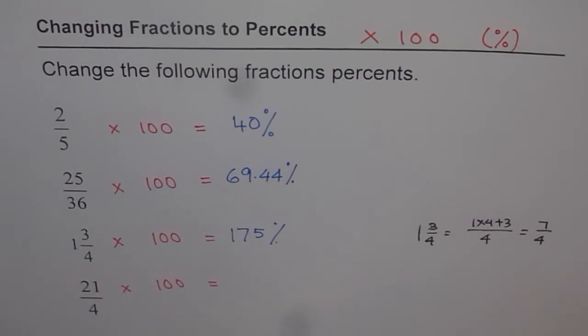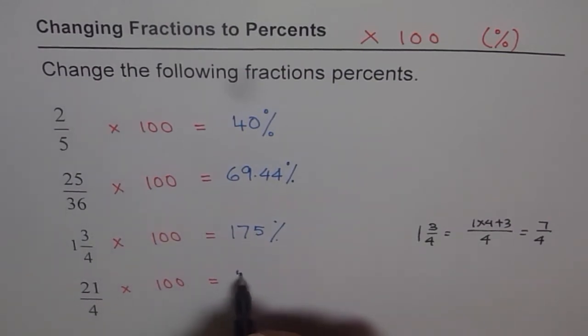21 divided by 4. This should be much, much more than 100 percent. So it is 525 percent.